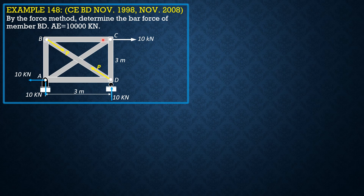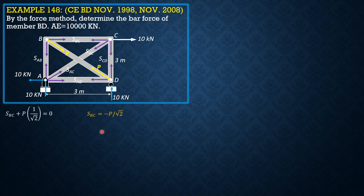Beginning with joint B, the slope of these diagonals is 1 to 1. So beginning with joint B, these forces are denoted by S, meaning stress. Summation forces X = 0: S_BC plus P times 1 over √2 equals 0, so S_BC = −P/√2. Summation forces Y (downward positive): S_AB plus P times 1/√2 equals 0, so S_AB = −P/√2.